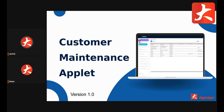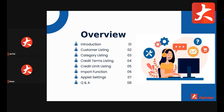Good afternoon everyone. This section is for the customer maintenance applet. The overview of topics we'll cover: first the introduction, then the customer listing where I'll show you how to search the customer, how to create or update customer information, then the customer category maintenance, customer credit terms and credit limit setting, the import function, and the applet setting.